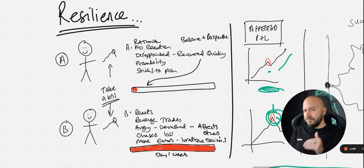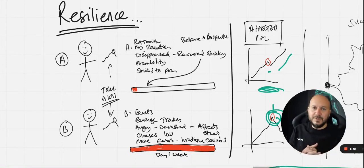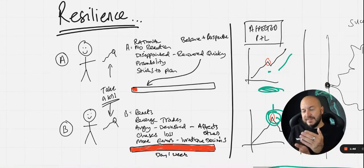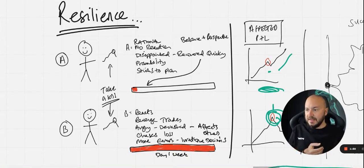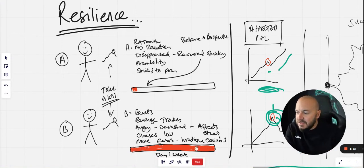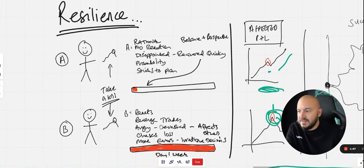Trader B is not resilient. They react. They revenge trade. They're angry. They're devastated. It affects those in like a ripple effect around them. Maybe they're angry, aggressive, mardy. It affects that. Oh, leave so and so alone. Whatever. They chase losses and they make more errors due to irrational, poor decision making. So that refractory period here is much longer. They can be affected by days or weeks from this setback.